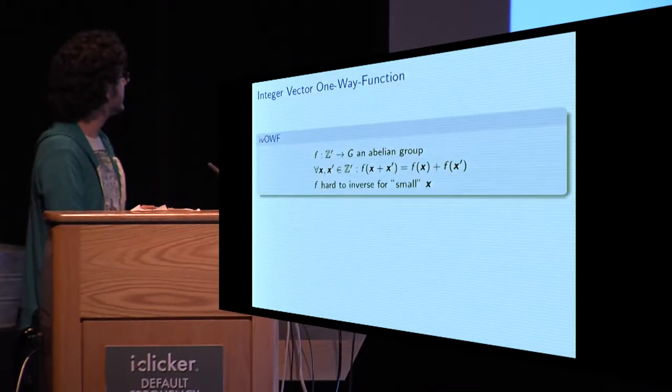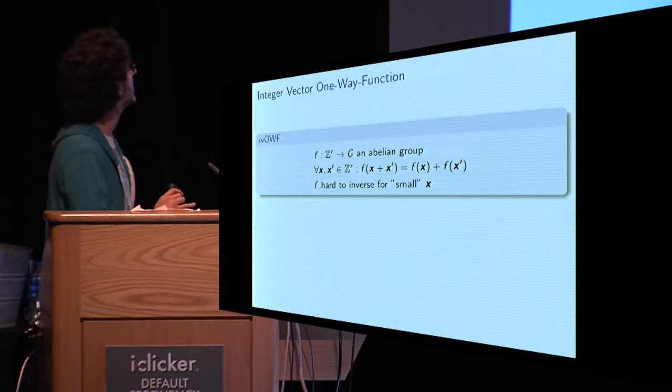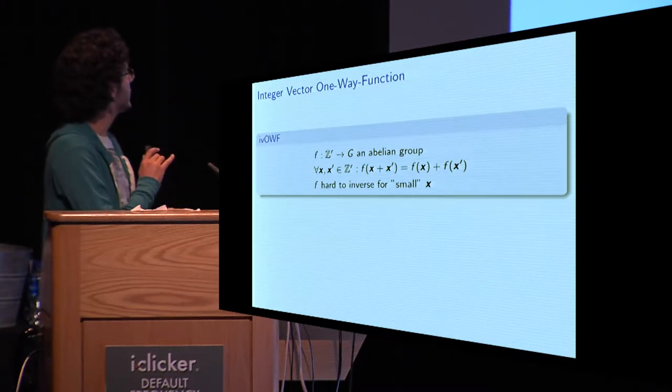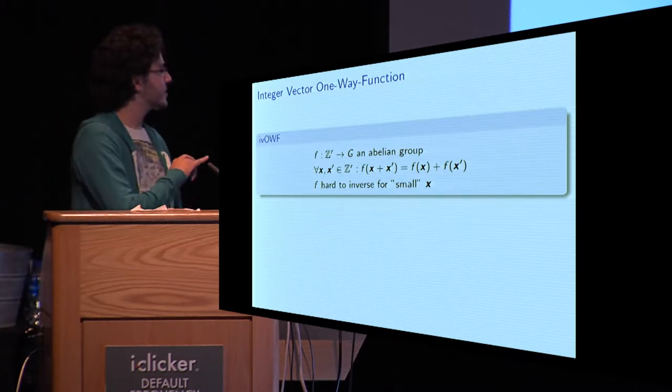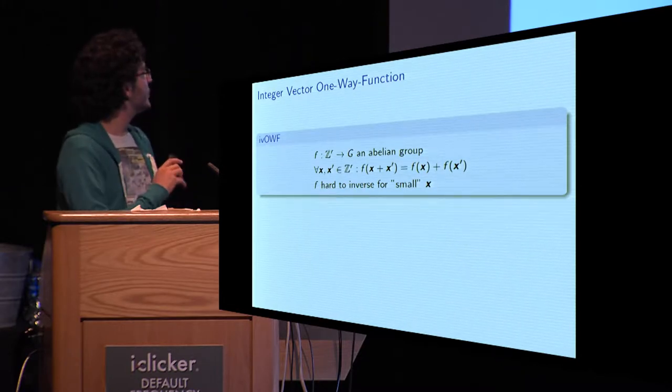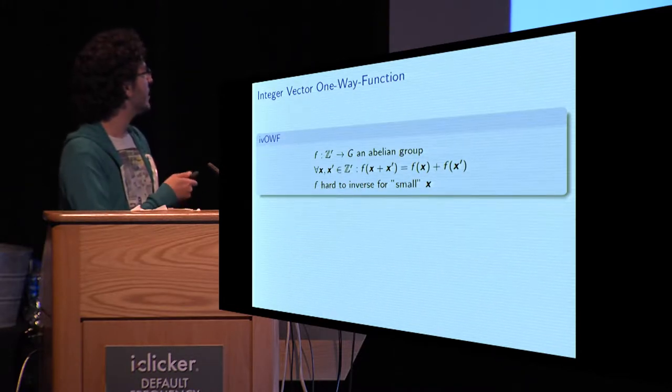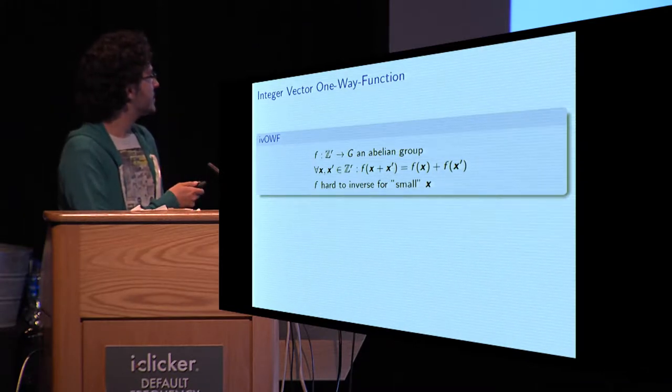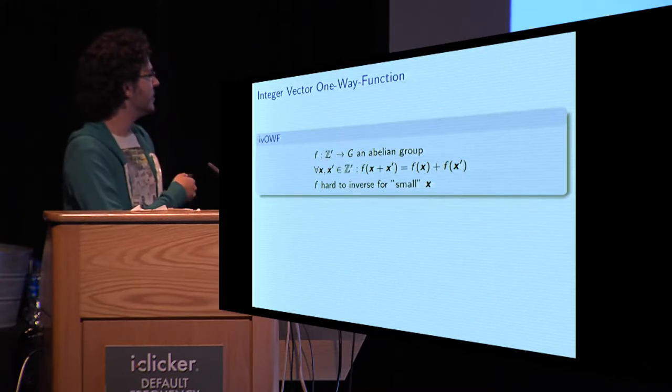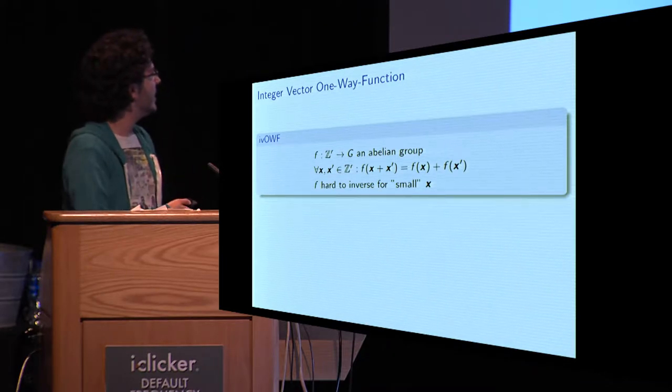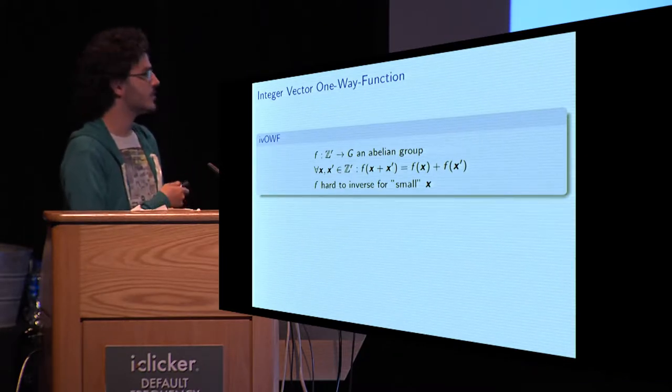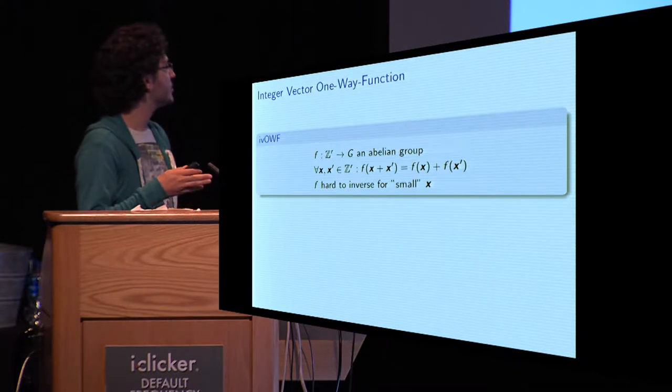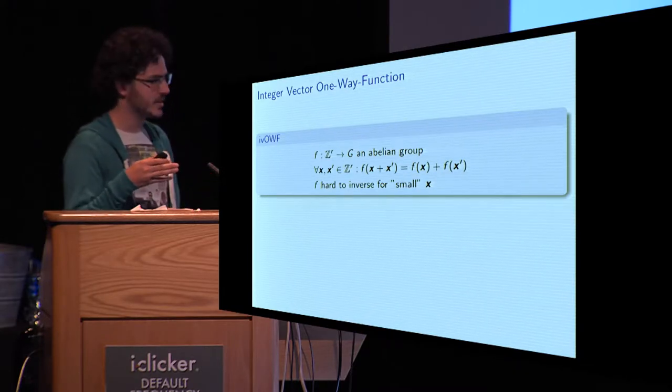First, some definitions. What are integer vector one-way functions? An integer vector one-way function will be a function going from Z to some power r into an abelian group, such that it is homomorphically, additively homomorphic. And it is hard to inverse for small vectors, where small means with norm bounded by some constant.